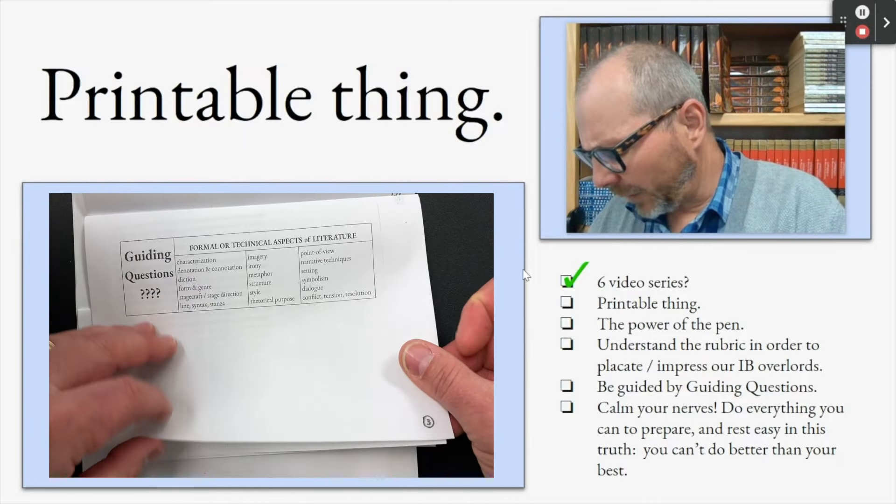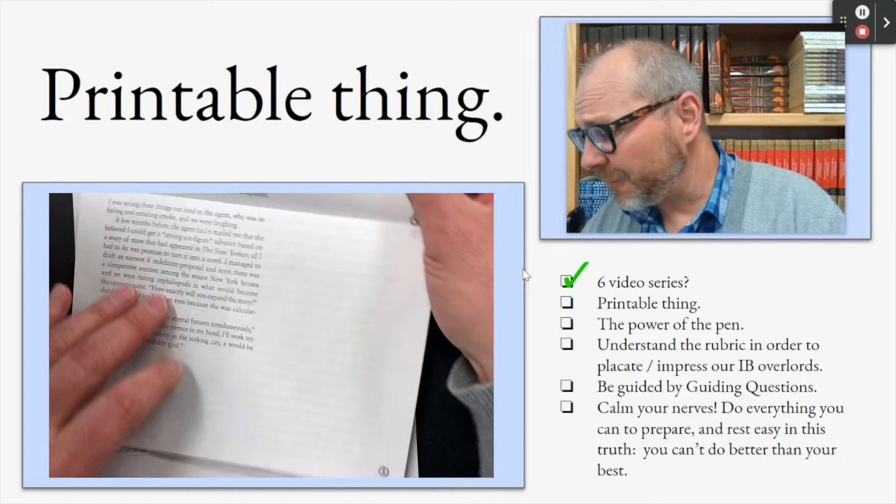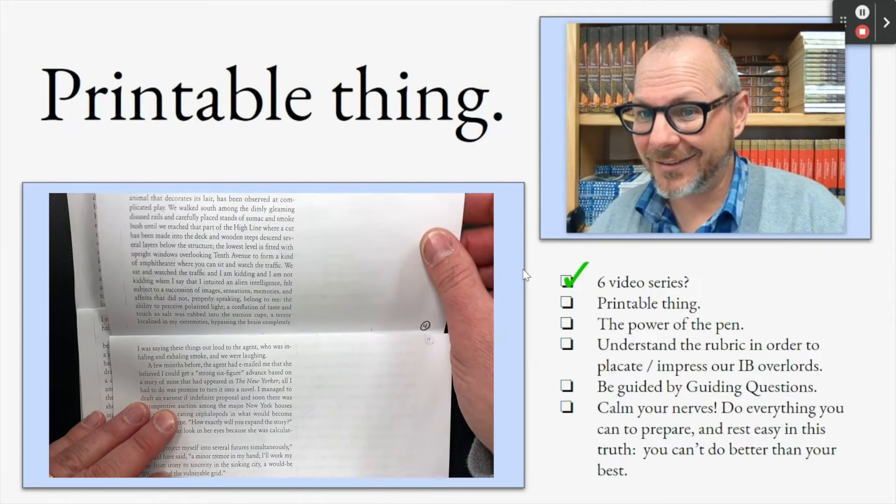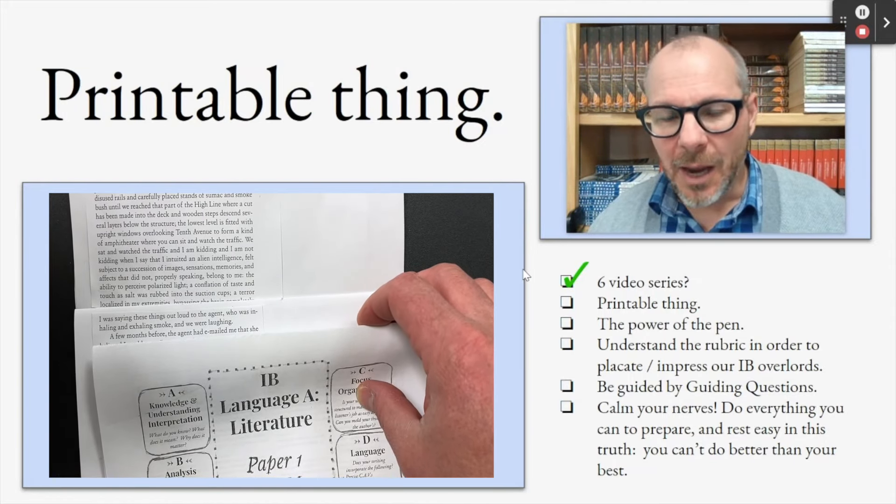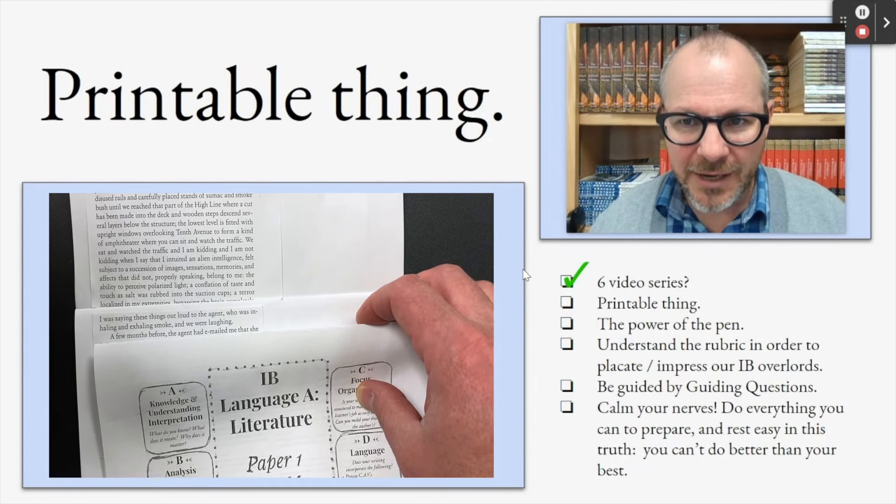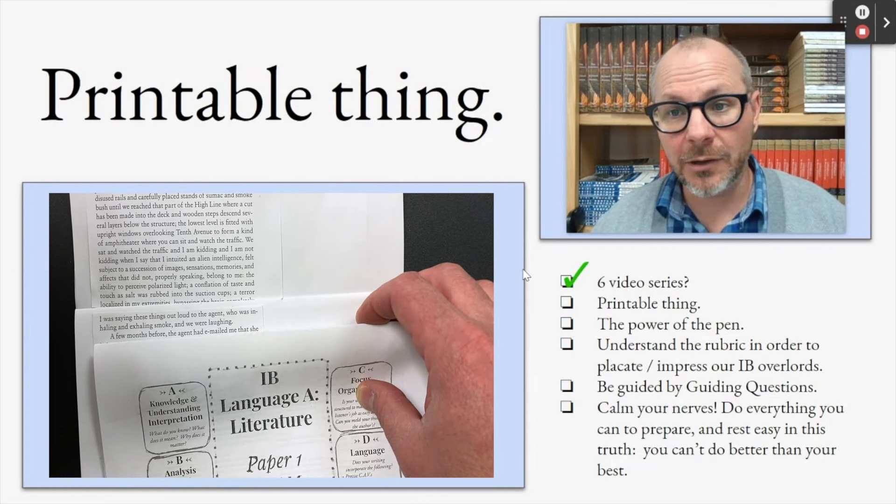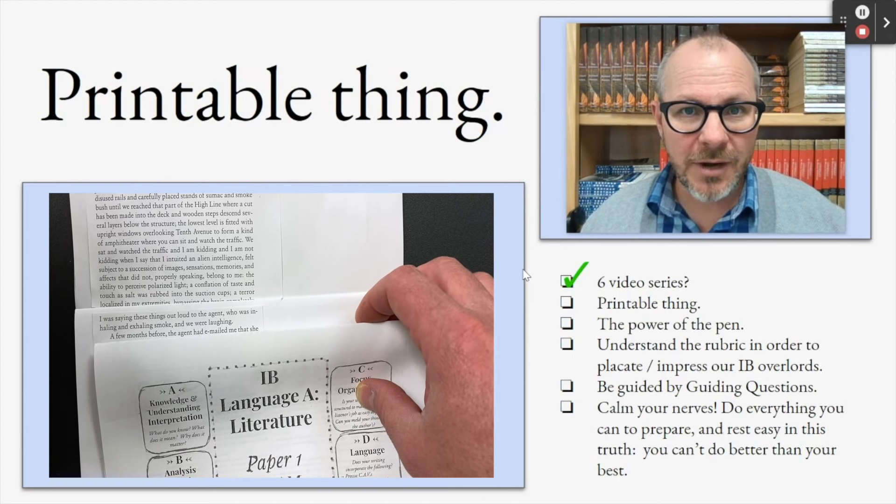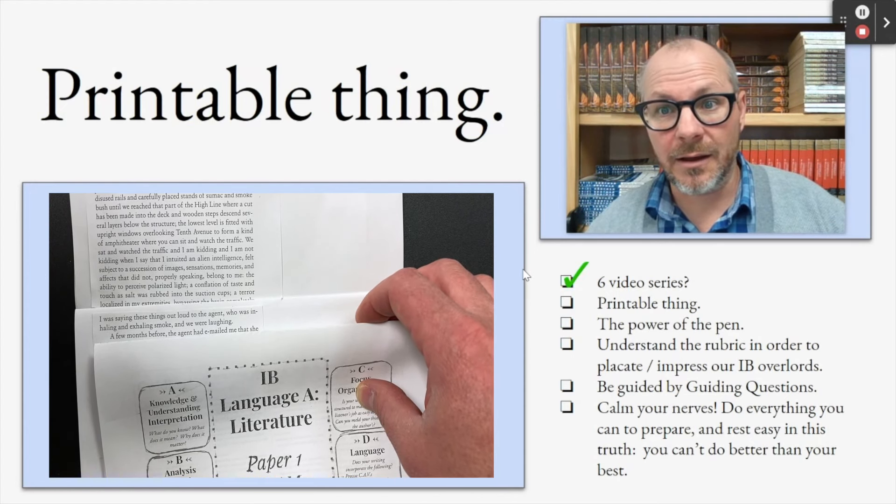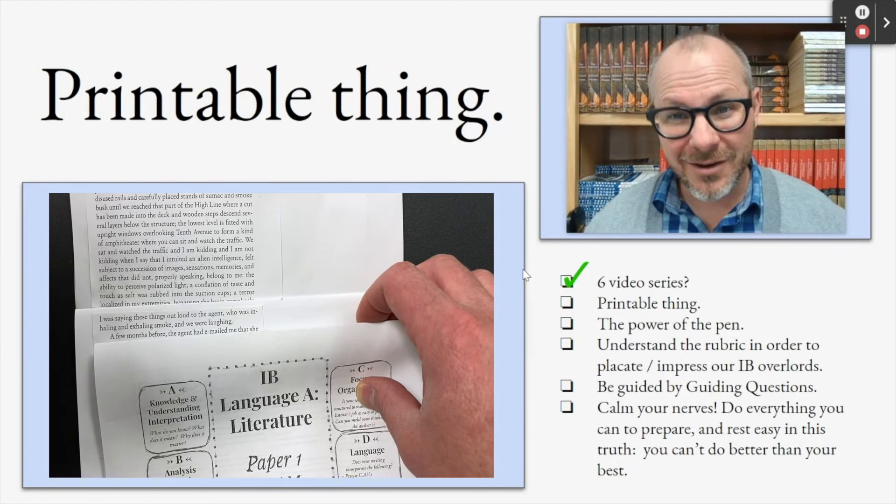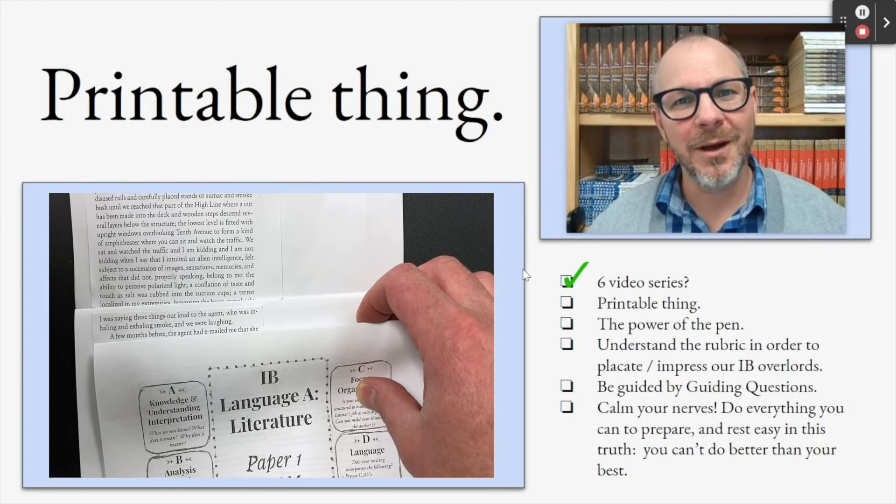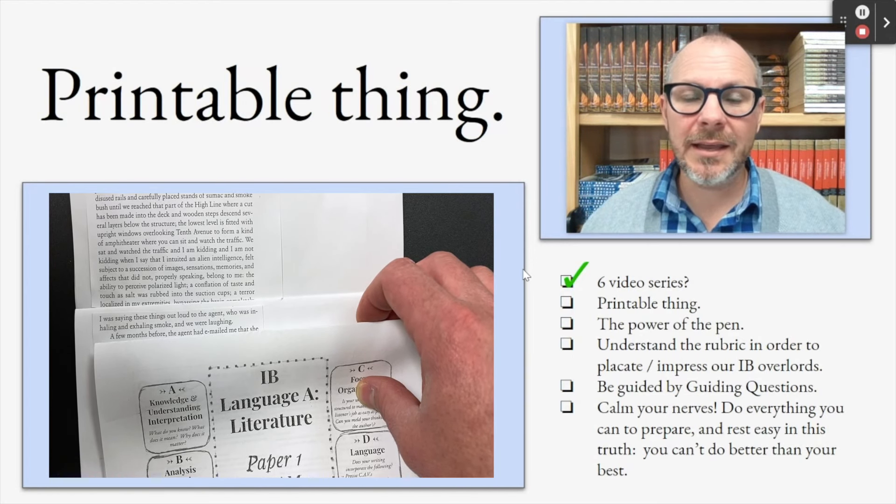It's going to have these different components, different ways to understand the rubric. It's got four different extracts. As I work through the videos, I'm going to come up with guided questions for those extracts. I'm going to annotate those extracts. I'm going to tell you the kind of things you're going to look for in a drama extract versus a nonfiction extract versus fiction versus poetry. The poem I have in here is a killer poem. It's really a thing of beauty. That's by Lee Young Lee.